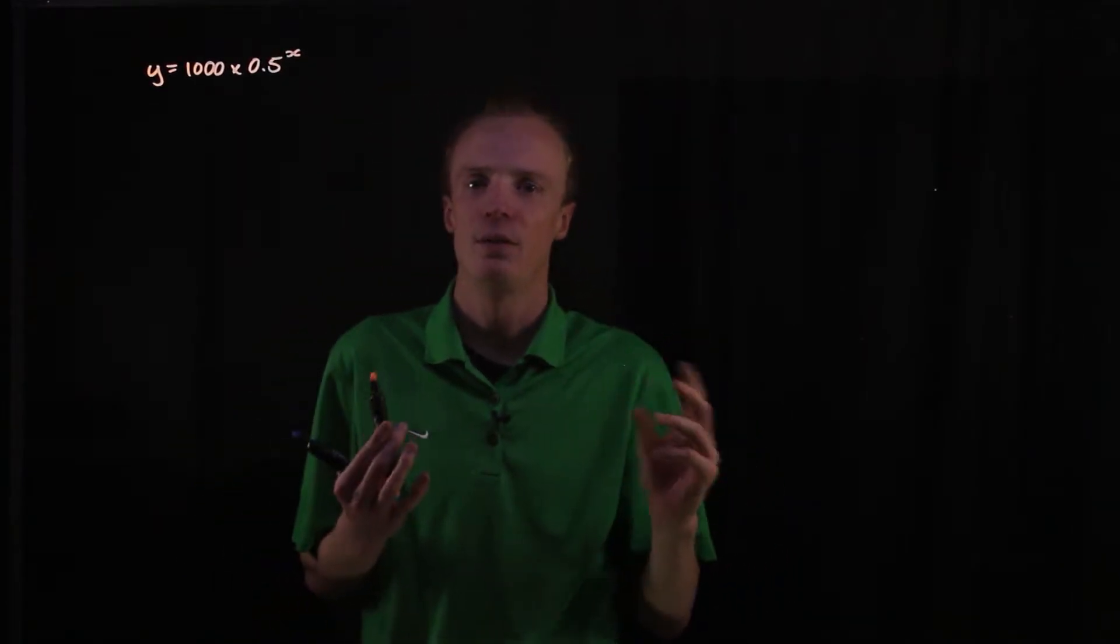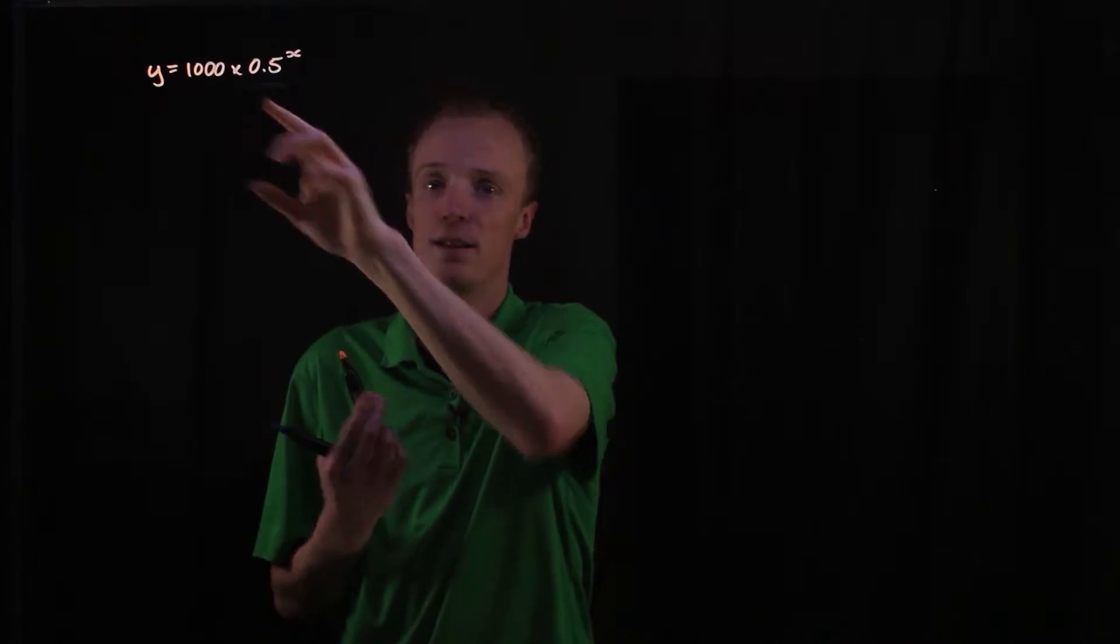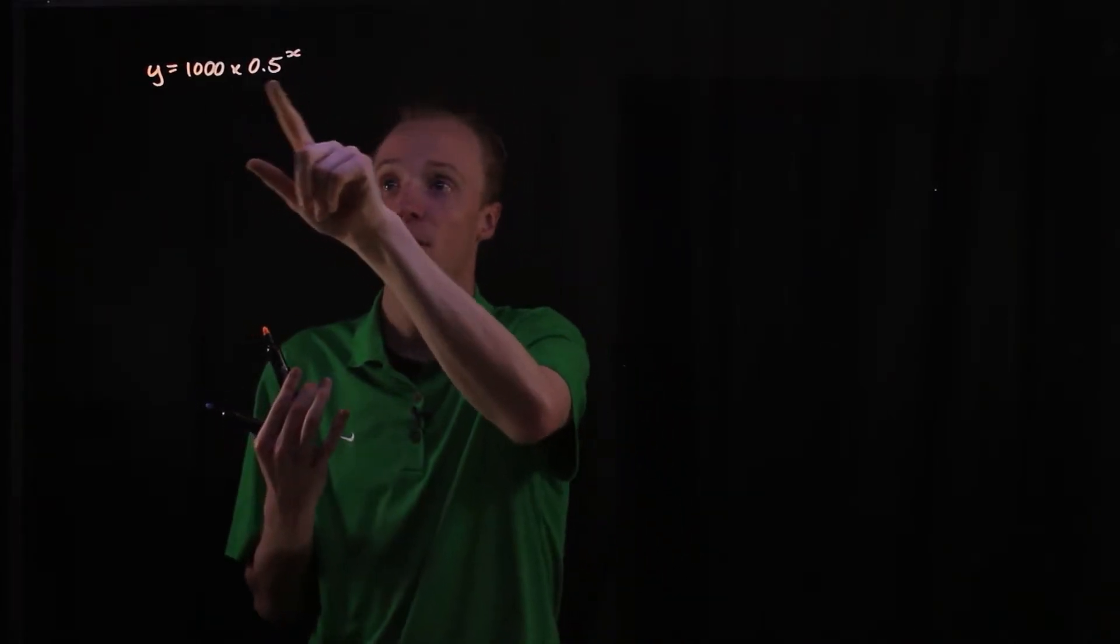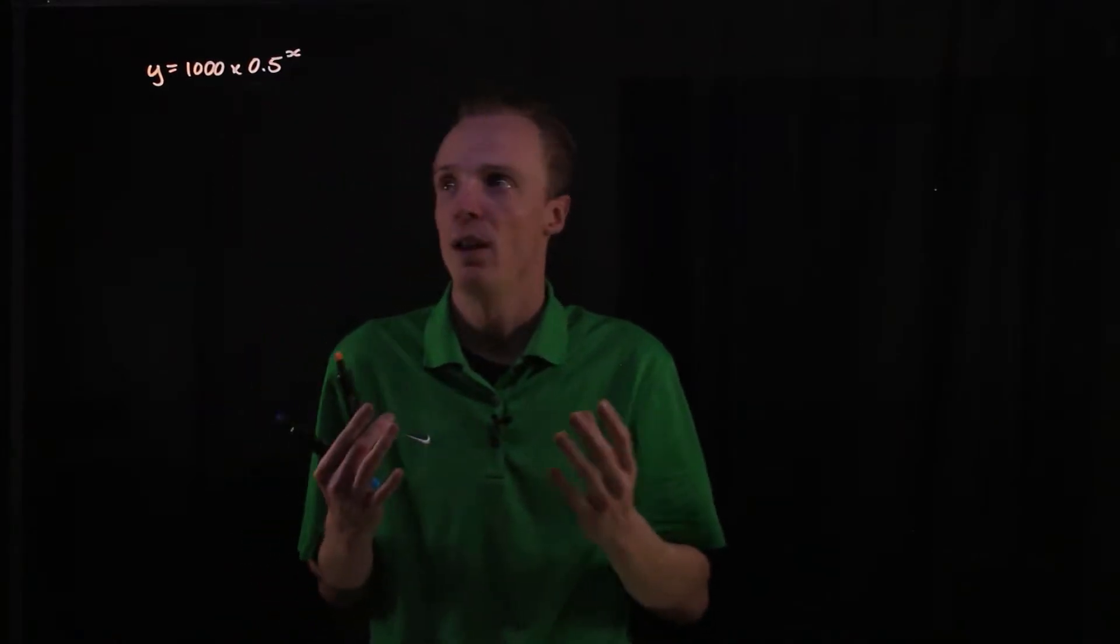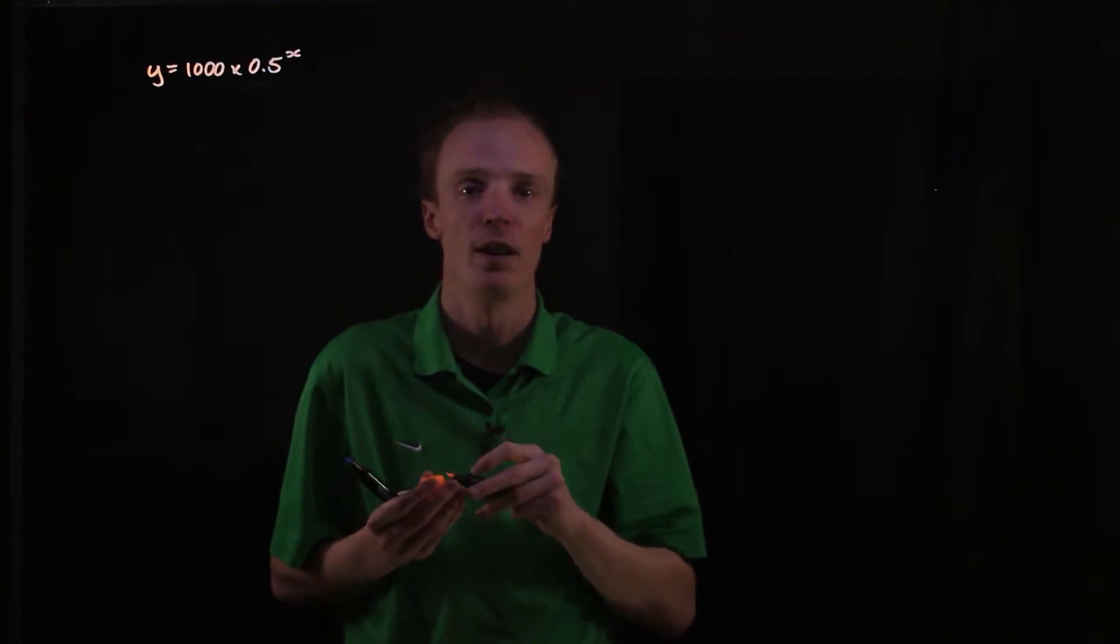Now you'll notice the difference here is the value of b here is less than 1. When it's less than 1, obviously we're only interested in b when it's greater than 0. We're looking at an exponential decay here when that b value is between 0 and 1.